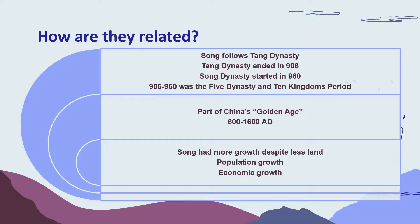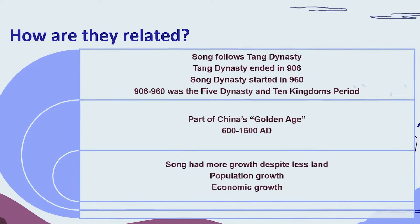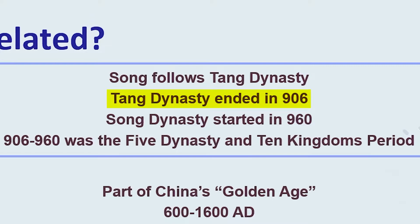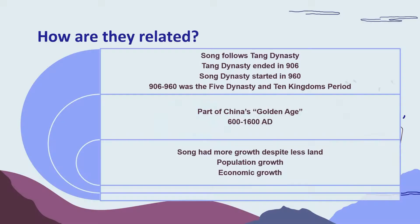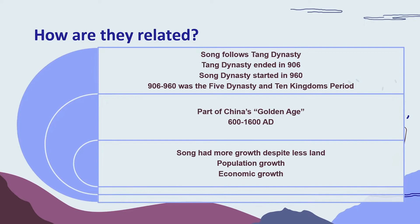So how are they related? The Song dynasty basically follows the Tang dynasty. However, in case you're wondering about the gap — the Tang dynasty ended in 906 AD and the Song dynasty started in 960 AD — the reason for this gap is the Five Dynasties and Ten Kingdoms period. Both dynasties are part of China's golden age, which happened between 600 AD to 1600 AD. One key difference is that the Song had more growth despite less land, particularly in population and economic growth.